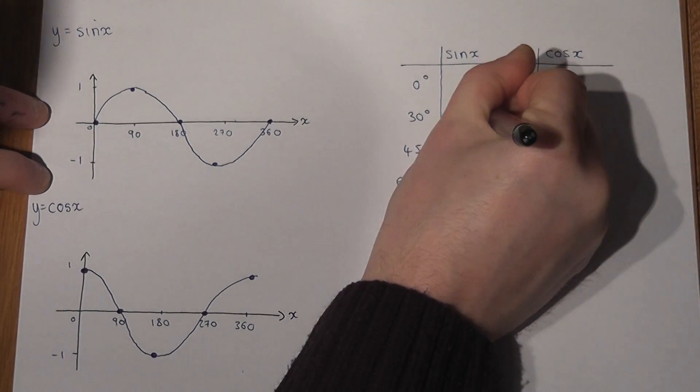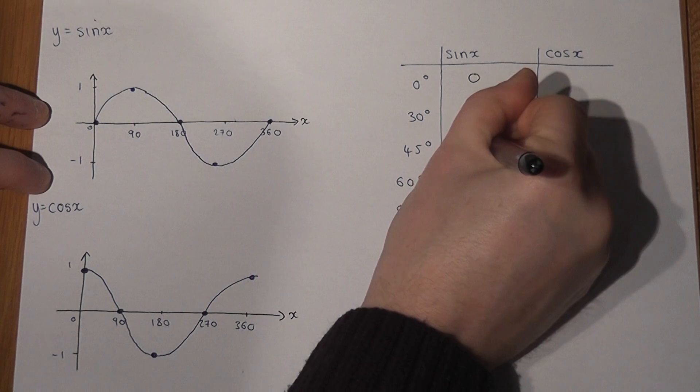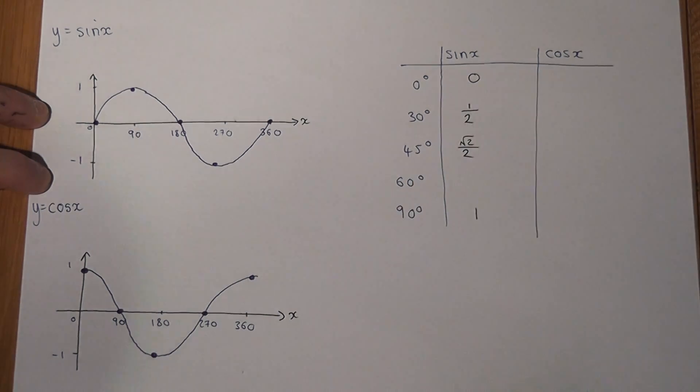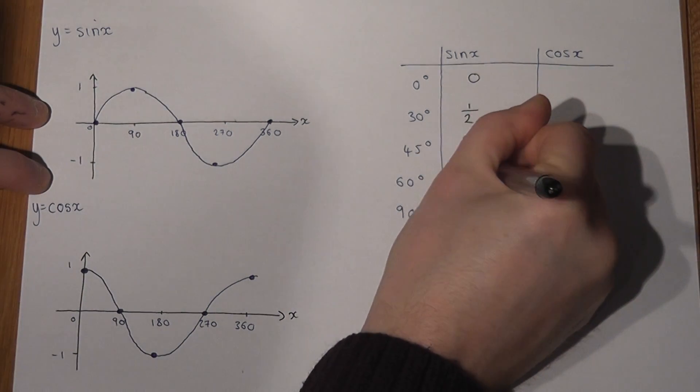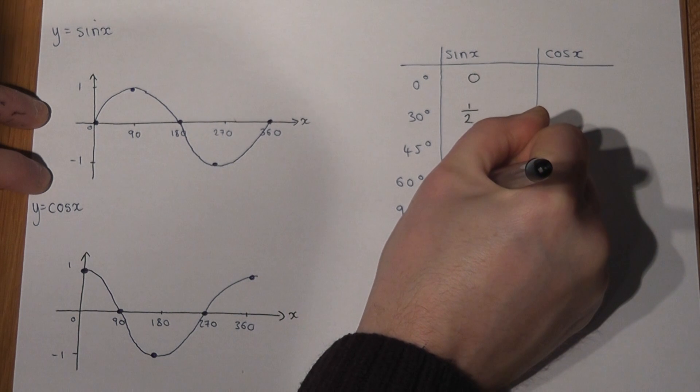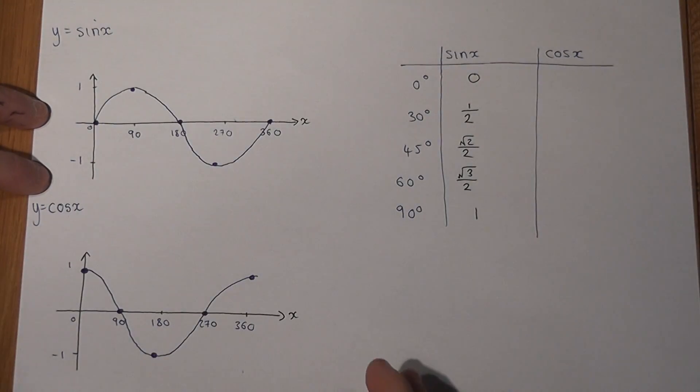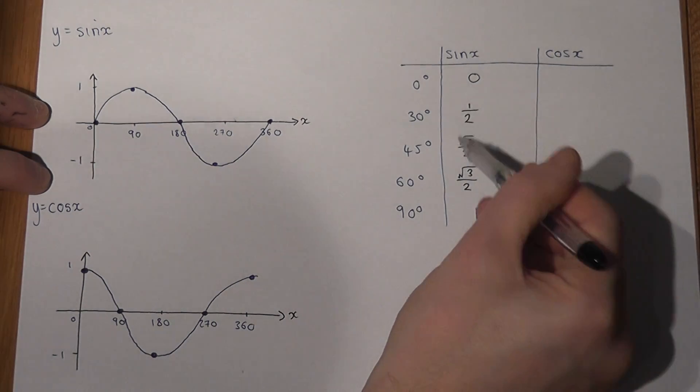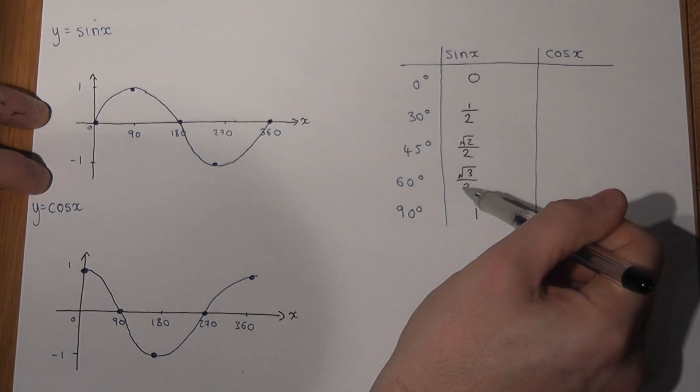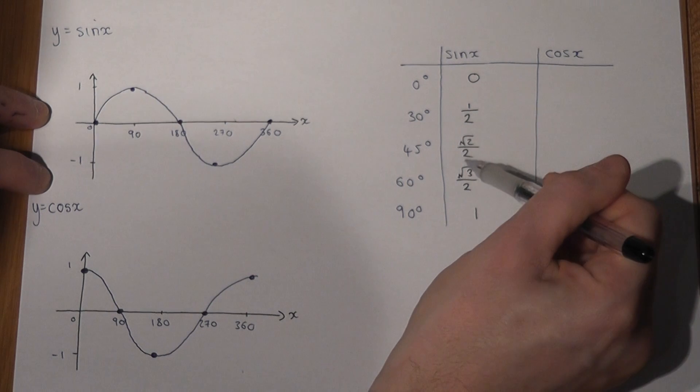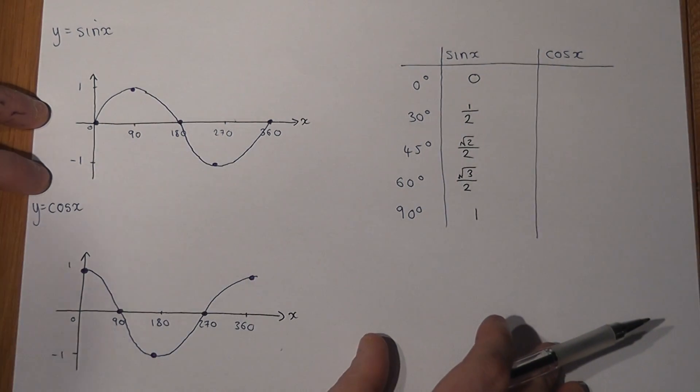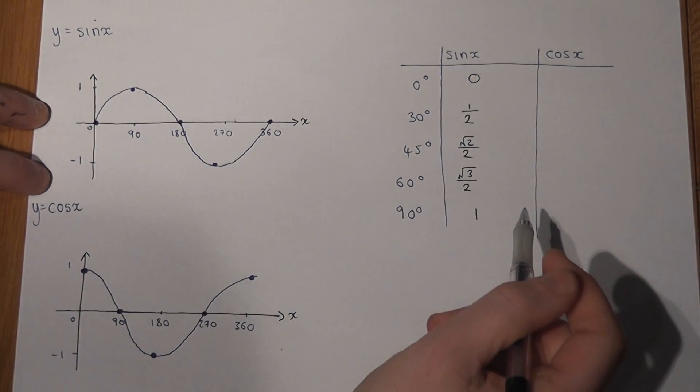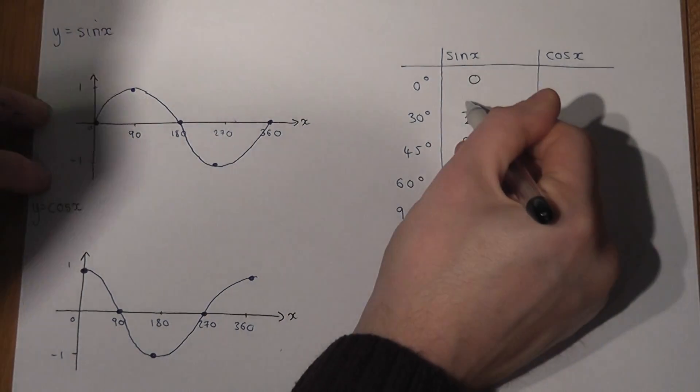A half, root 2 over 2, and root 3 over 2. And this is not too hard to memorise. They're all over 2, and it goes 1, 2, 3 on the numerator with a square root.